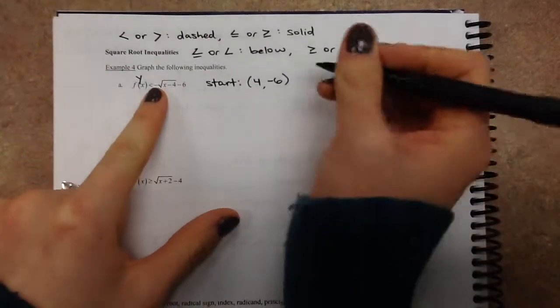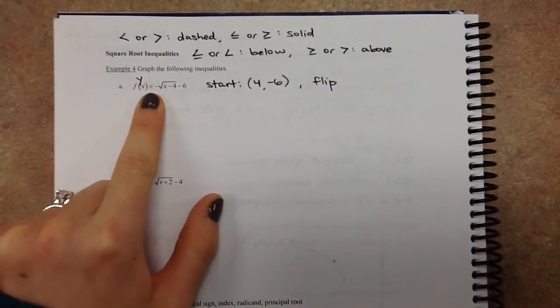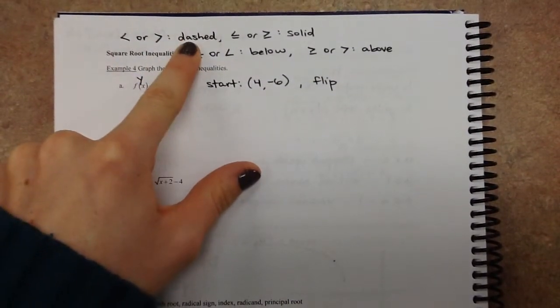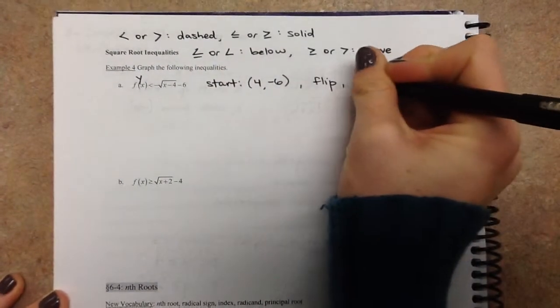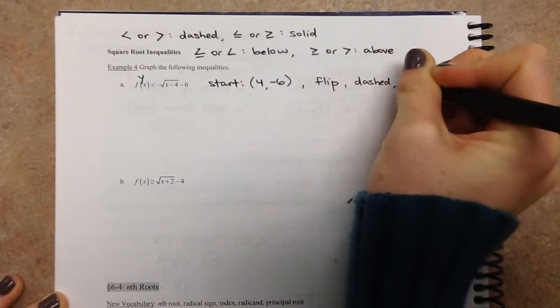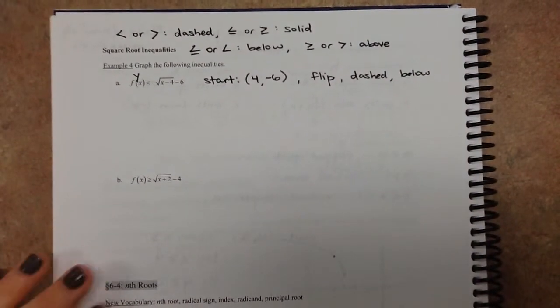The negative on the outside tells you that it is flipped upside down. And then this less than, first of all, means a dashed line, and it means we shade below. So we've got a dashed line, and we're going to shade below. So those are all the pieces that we need. We're going to combine them all up.